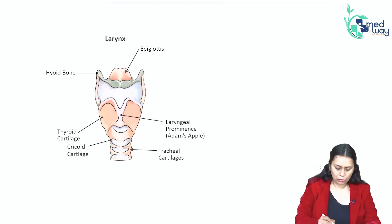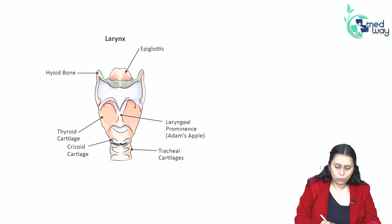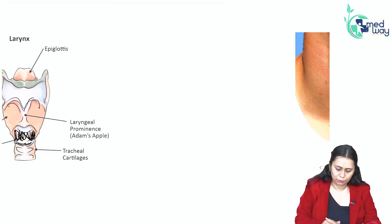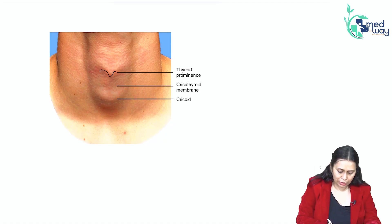So we know this is your thyroid cartilage and this is your cricoid. In between them is your cricothyroid membrane. This is the thyroid prominence, this is the cricoid, and in between is the cricothyroid membrane.